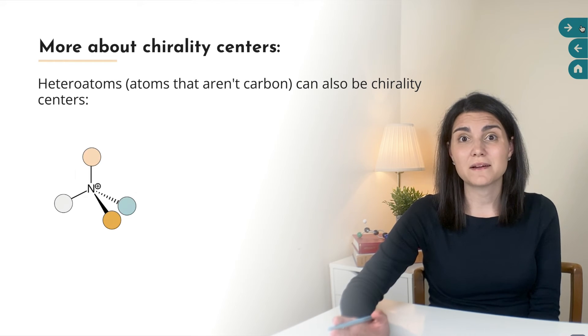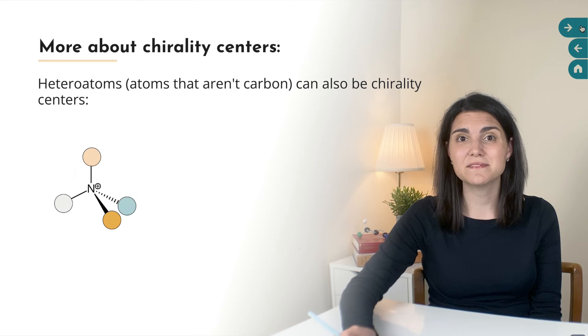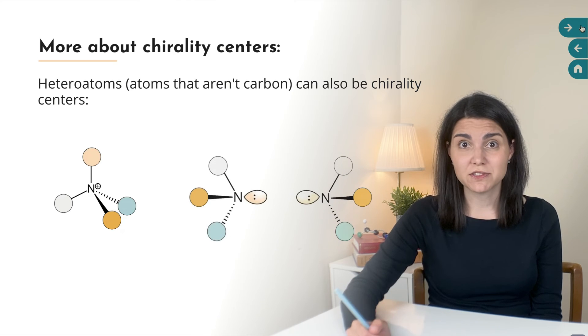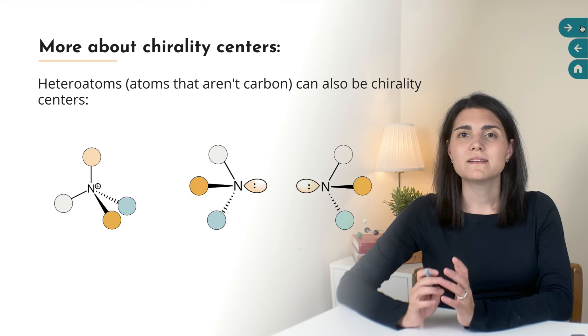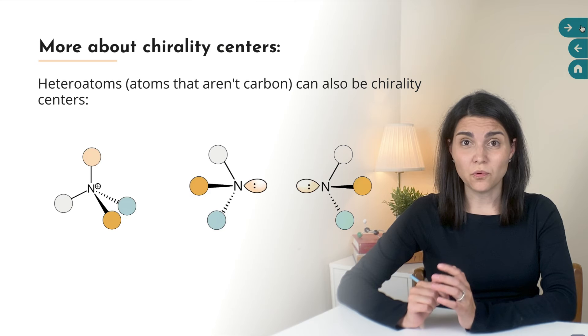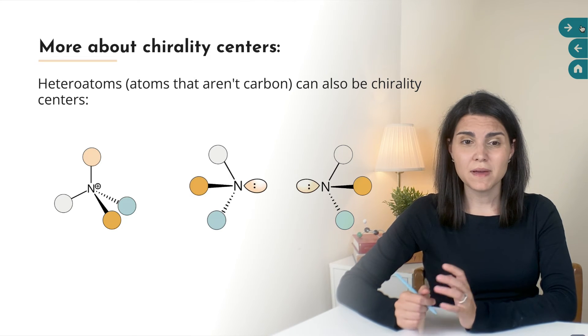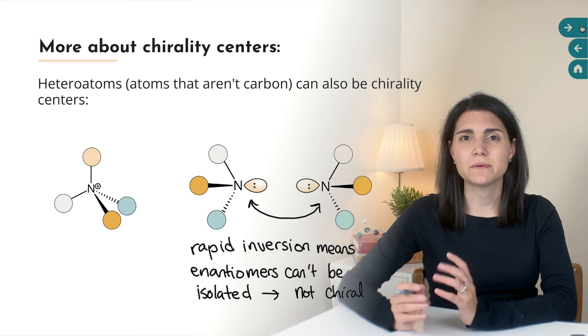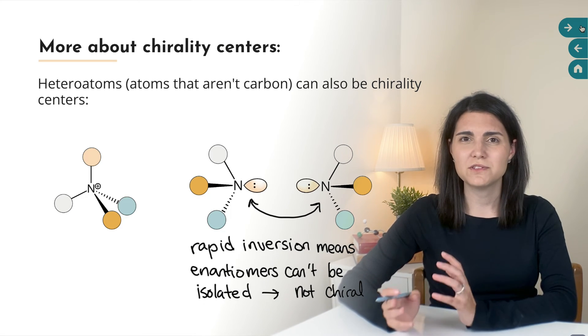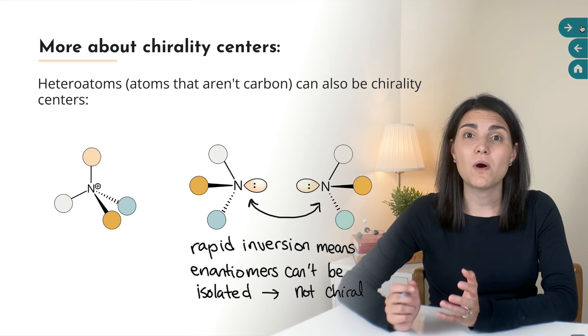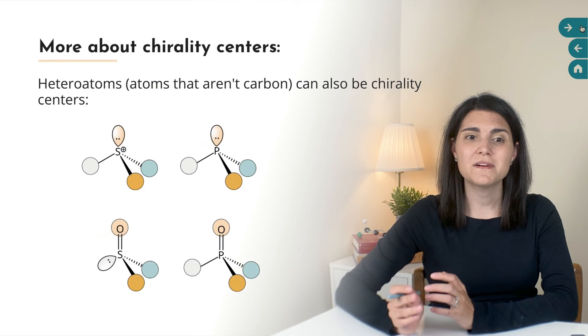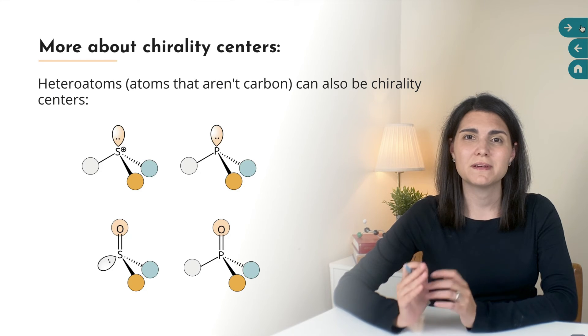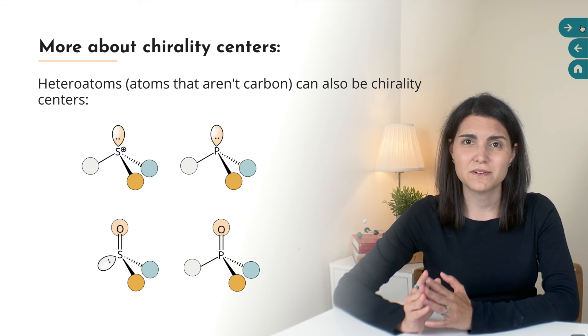Heteroatoms, which just means atoms that aren't carbon, can also be chirality centers. For example, positively charged nitrogen atoms connected to four different groups are chirality centers. However, neutral nitrogens connected to three different groups and having one lone pair are not considered chiral. Even though technically we can think of the lone pair as one of four different things on that nitrogen atom, amines like this are actually rapidly inverting at room temperature, which means that they're going back and forth between the two mirror image configurations. And so it's impossible to isolate one enantiomer or the other. So they just aren't considered chiral molecules. Here are some other examples of heteroatoms that can be chirality centers, but it's less likely that you're going to run into these in your introductory organic chemistry course.